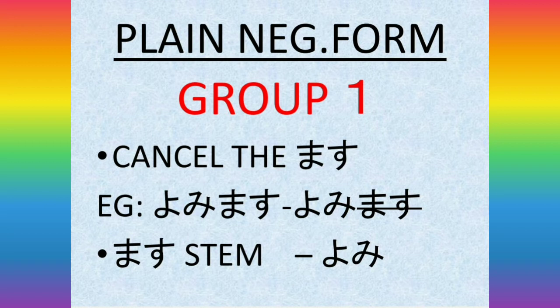If you want to talk about the polite form versus the negative form — for example, if you want to talk about 'drink' (Nomimasu): the positive polite is Nomimasu, and the negative polite is Nomimasen.